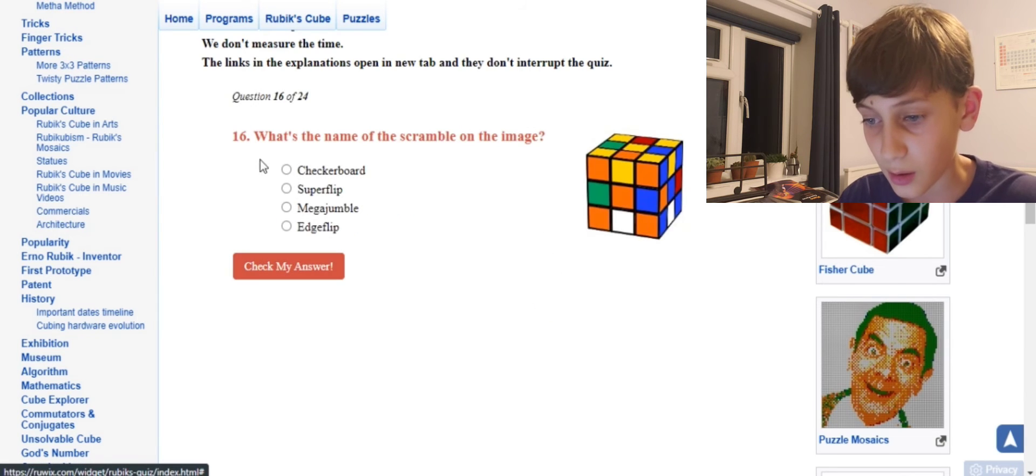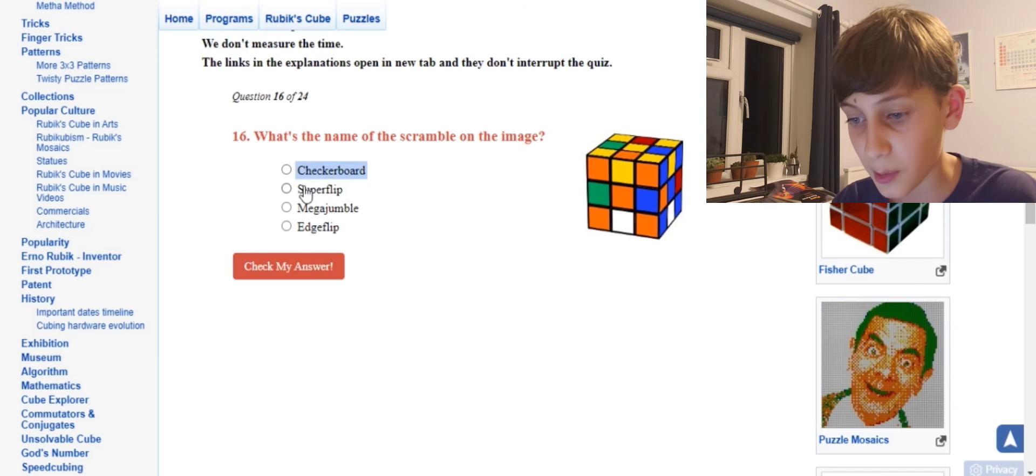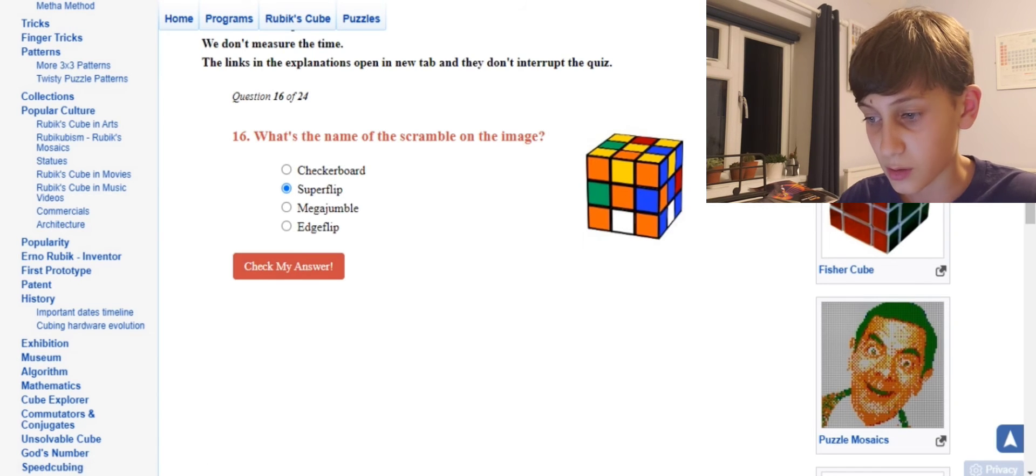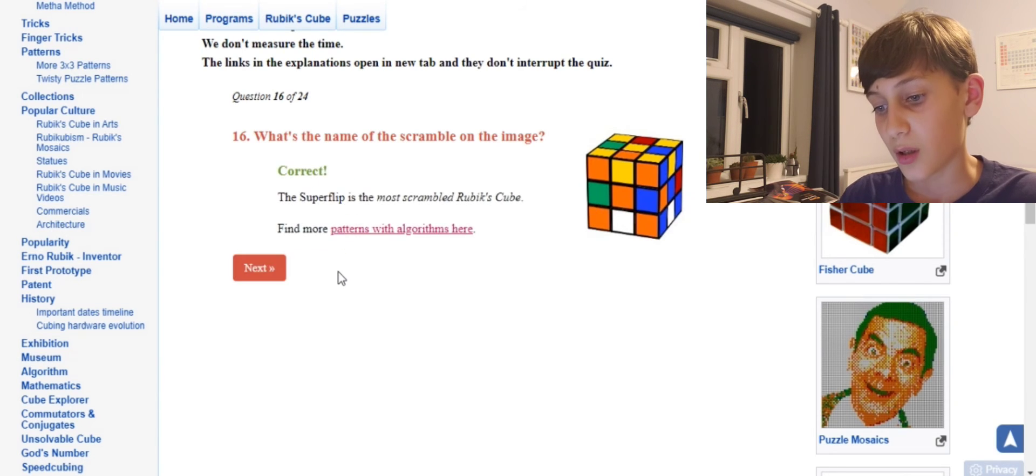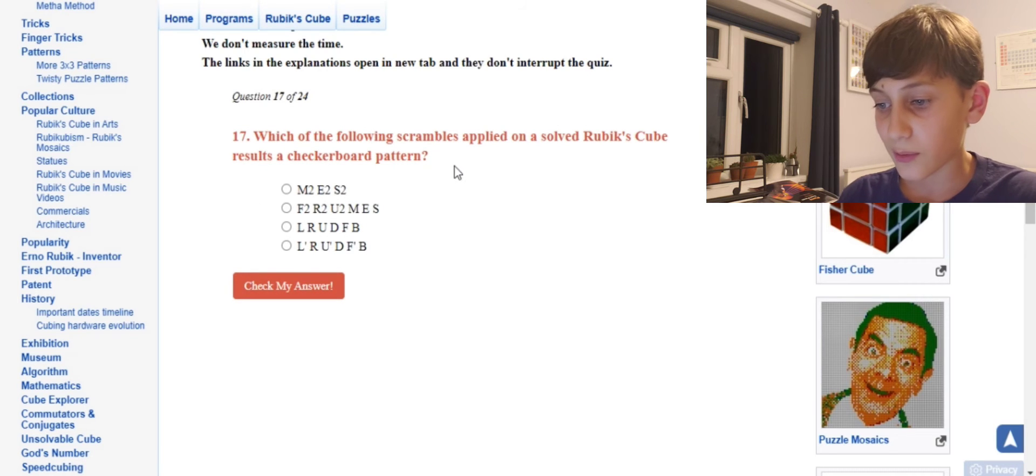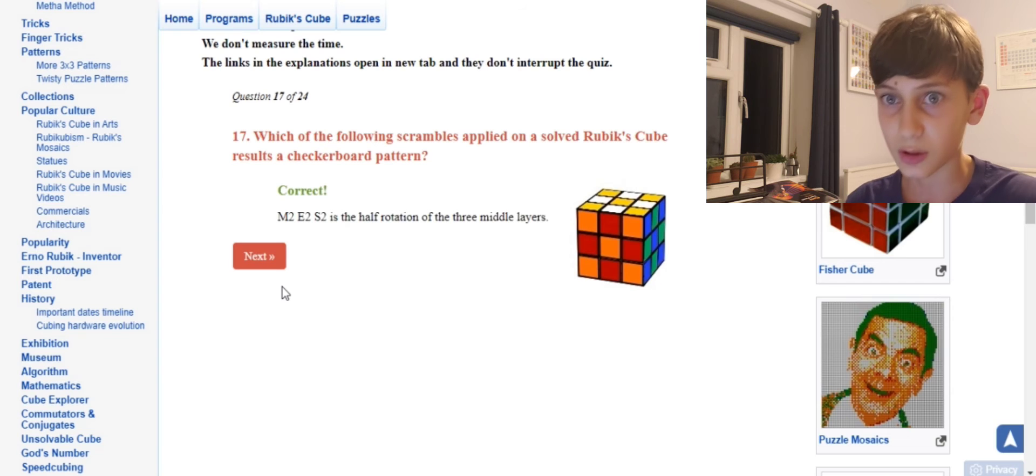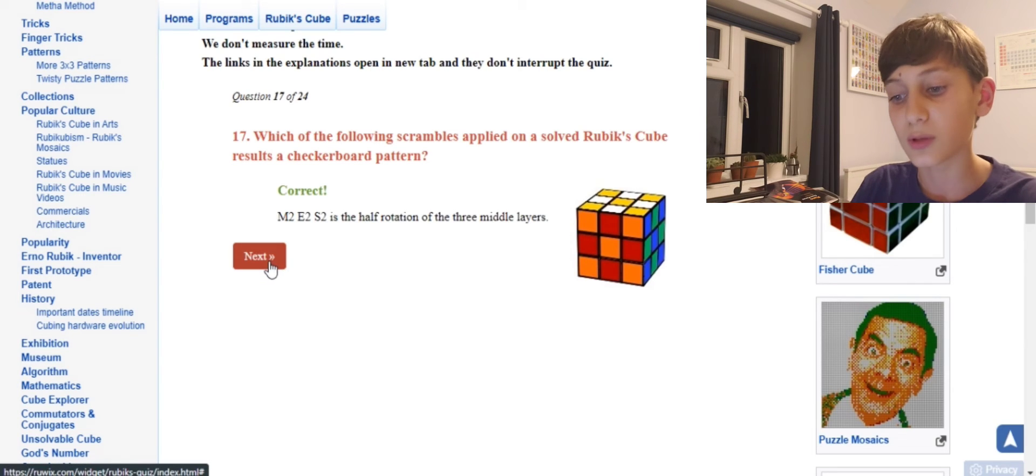What's the name of the scramble on the image? That's superflip, because all the edges are flipped. Correct! Which of the following scrambles will apply to the solved Rubik's Cube? Okay, that's M2 E2 S2, because you just turn each axis twice to make it, which is pretty easy.